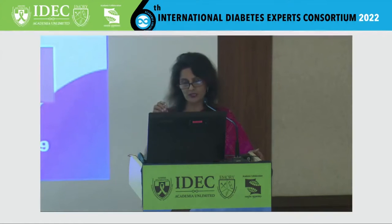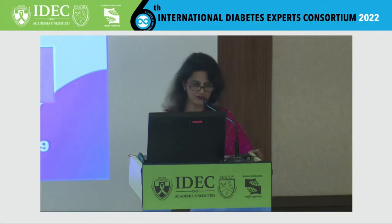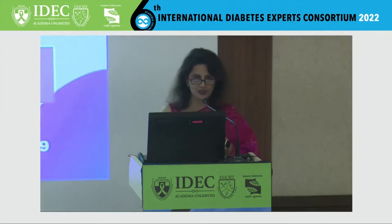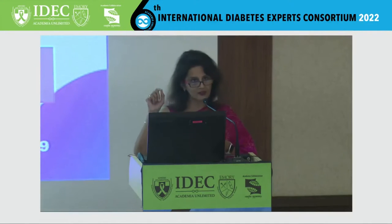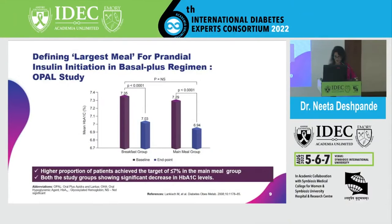When you want to give a basal plus, you obviously have to give one prandial first — but at which meal? You decide which is the largest meal. Instead of just giving it ad hoc at breakfast or at lunch, if you try to find out which is the largest meal and give it at that time, you could be getting better results. A study shows that rather than giving it at breakfast just ad hoc, if you actually identify the main meal and give it at that time, you get a much better A1C reduction. Study what is the major meal of the day, what is the major excursion of the day, and institute the prandial insulin at that time.